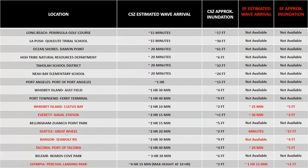In Seattle and Tacoma the wave arrives in about two and a half hours, with inundation depth of about two to 10 feet depending on location. Down in Olympia the first wave arrives about four hours and 15 minutes after the earthquake, though the maximum wave arrives at about 10 hours after the earthquake start with inundation of about two feet. For some locations in red, we have estimated inundation from a Seattle fault event. For Seattle in particular, the Seattle fault earthquake will generate a tsunami arriving at the downtown Seattle waterfront within just minutes, with inundation depth expected to be about 27 feet in the downtown waterfront area and about five feet in the Port of Tacoma.